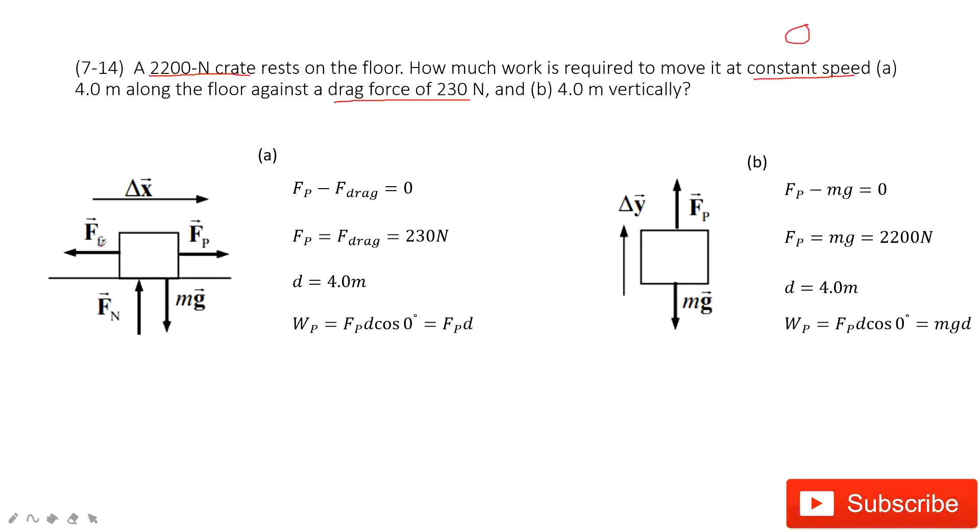Then we look at the horizontal direction. We have the force acted by the person. And also the force by the drag force. The drag force is given. So this is the drag force. Now, in this one, we can see, because it moves at constant speed, so in the x component, the acceleration is zero, the force is balanced.